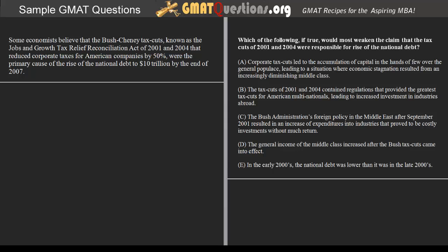Some economists believe that the Bush-Cheney tax cuts, known as the Jobs and Growth Tax Relief Reconciliation Act of 2001 and 2004, that reduced corporate taxes for American companies by 50%, were the primary cause of the rise of the national debt to $10 trillion by the end of 2007. Which of the following, if true, would most weaken the claim that the tax cuts of 2001 and 2004 were responsible for the rise of the national debt?